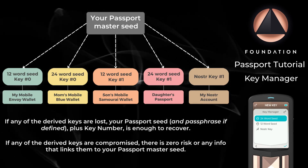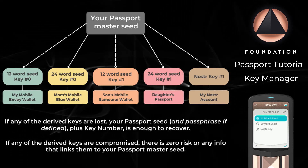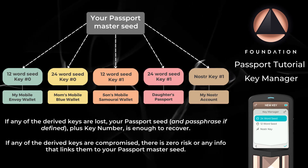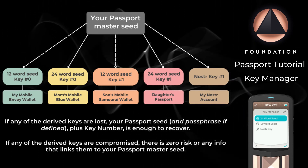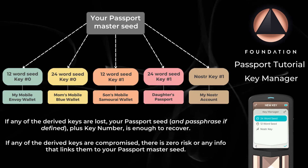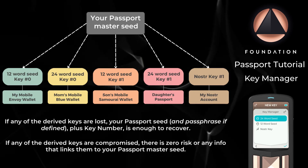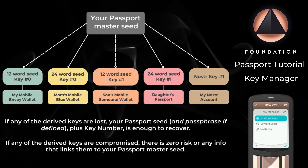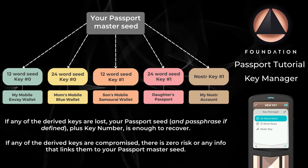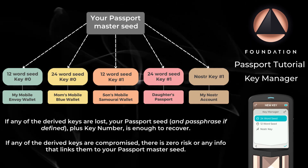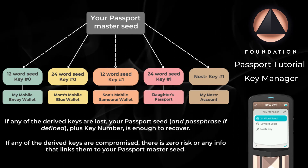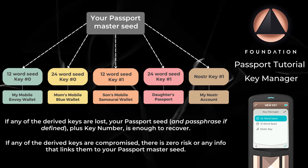So why might you want to use the key manager to generate additional Bitcoin seeds with Passport? Here are a few common use cases. Number one, you could populate all of your mobile wallets using unique child seeds from Passport. If you lose any of those mobile wallet backups, Passport can re-derive any of those seeds so that your funds are not lost. Number two, populate the wallets of your friends and family, safe in the knowledge that if they fail to properly back up their wallet, you can re-derive their seed and bail them out at any time. And number three, securely generate and back up yours or your family members' NOSTR private keys — we'll be covering that in a separate video.